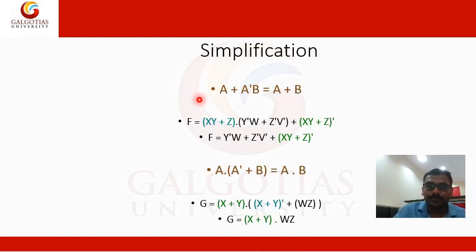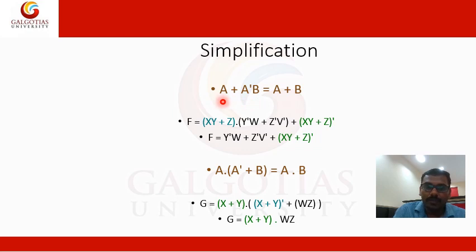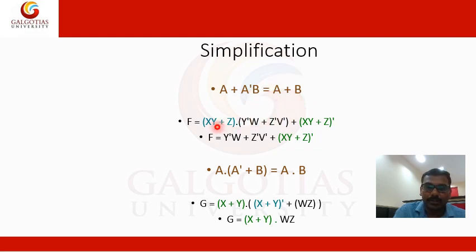The simplification law states that A plus A dash B equals A plus B. This is because we can write A plus A dash B as (A plus A dash) dot (A plus B) using the distributive law for AND. Since A plus A dash is always 1, we get 1 dot (A plus B), which equals A plus B.